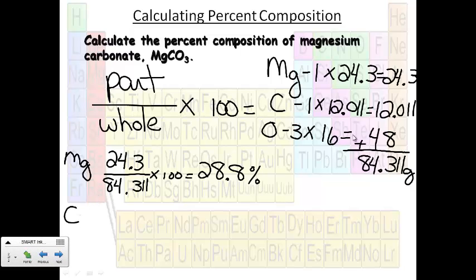Now, to get the part that's just carbon, you want to take just the amount of the mass that ended up from the carbon, so 12.011, divided by the mass of the whole compound again, 84.311, times 100. So I got 14.3%.